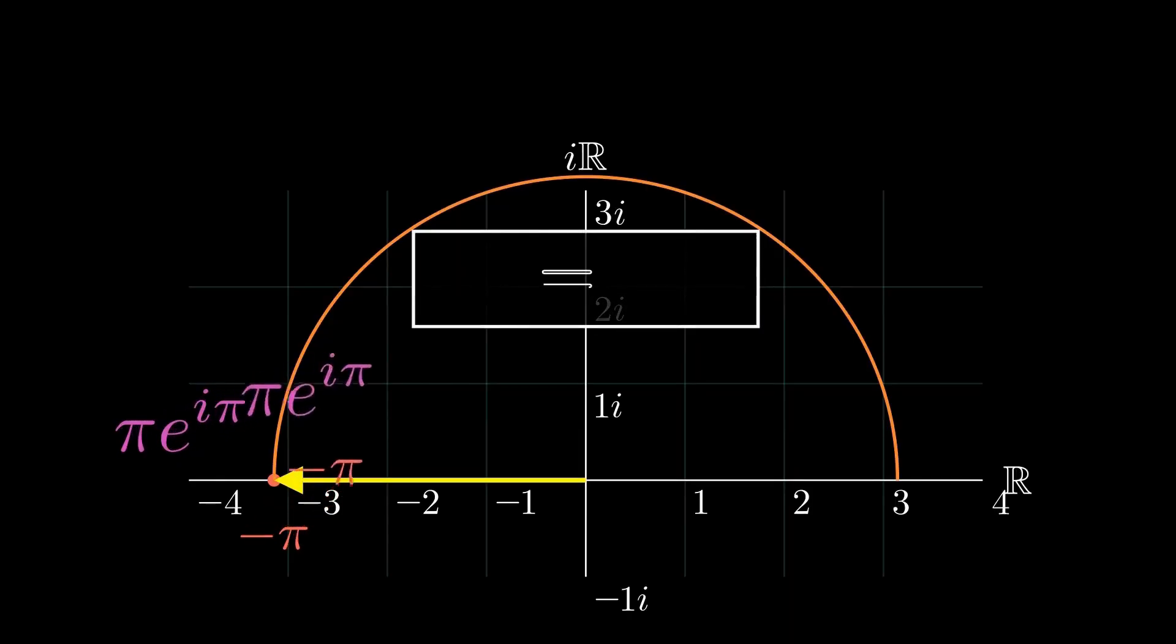And here is the formula. Negative pi is simply positive pi, multiplied by Euler's rotation term, e to the i pi.